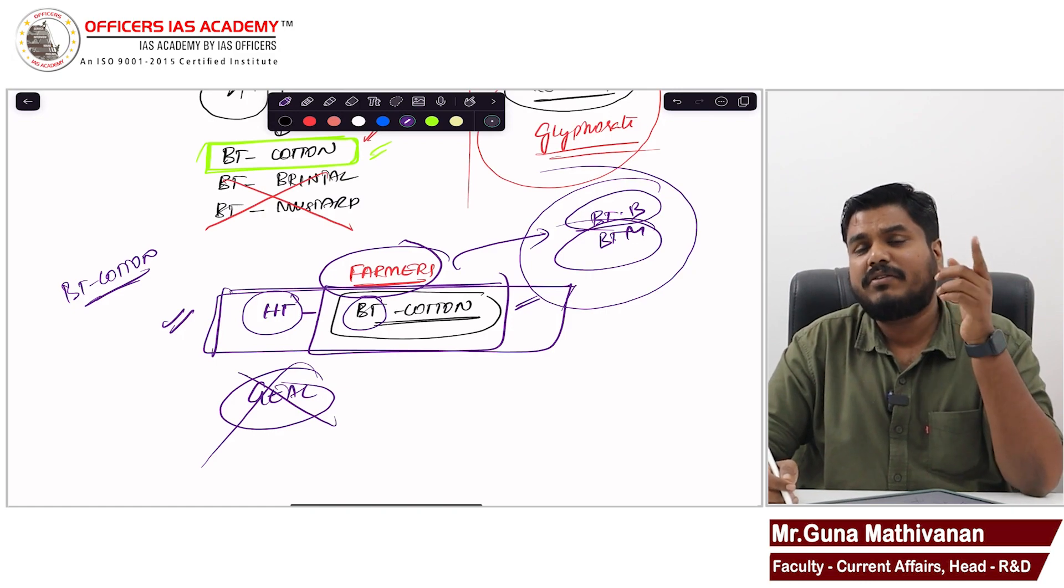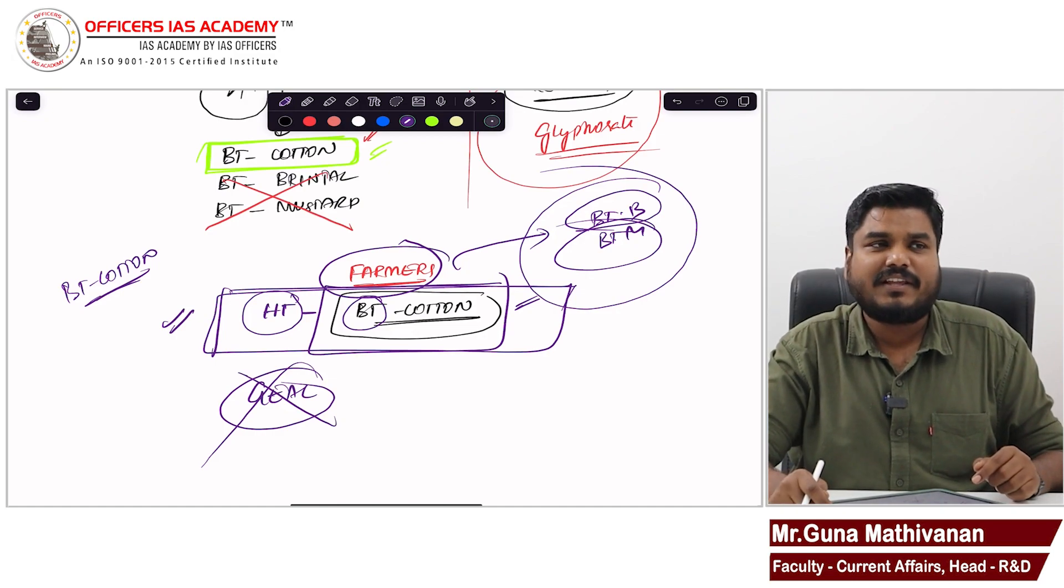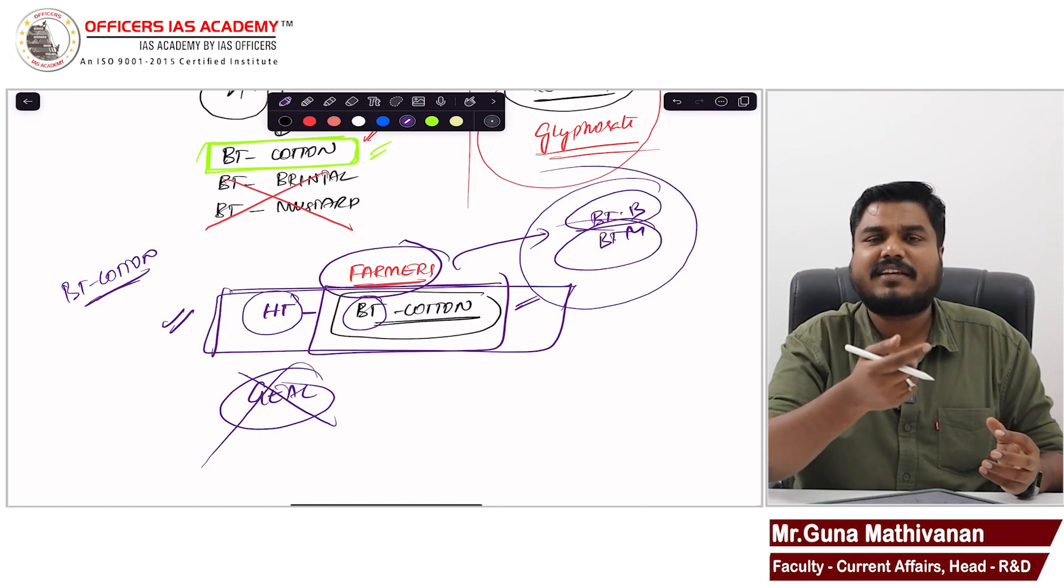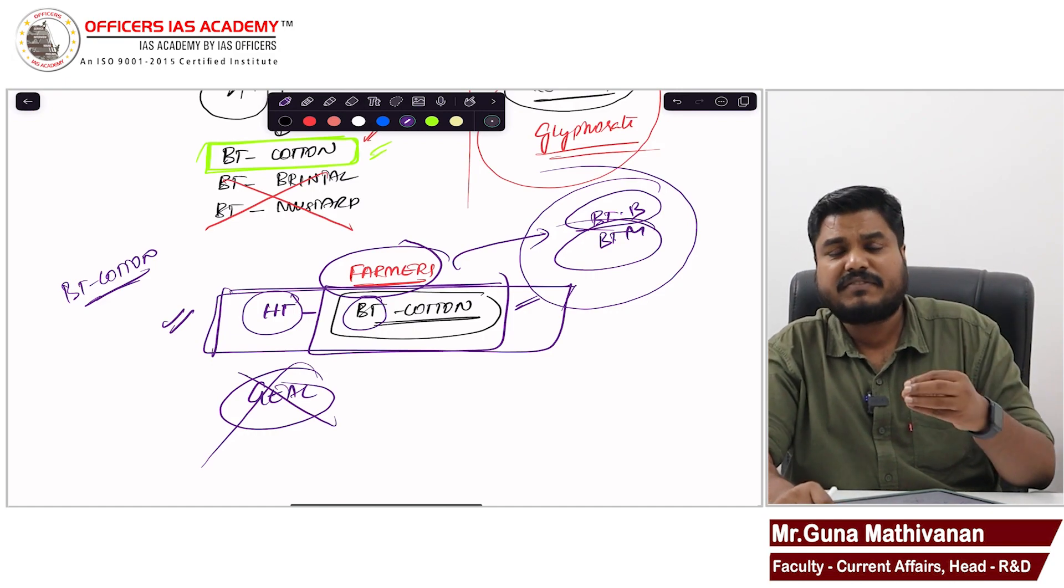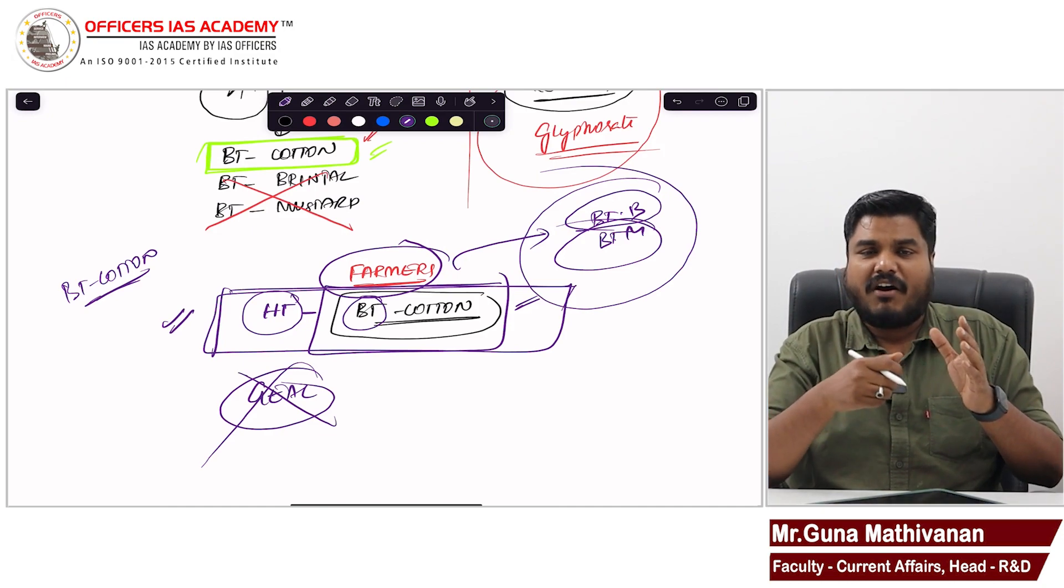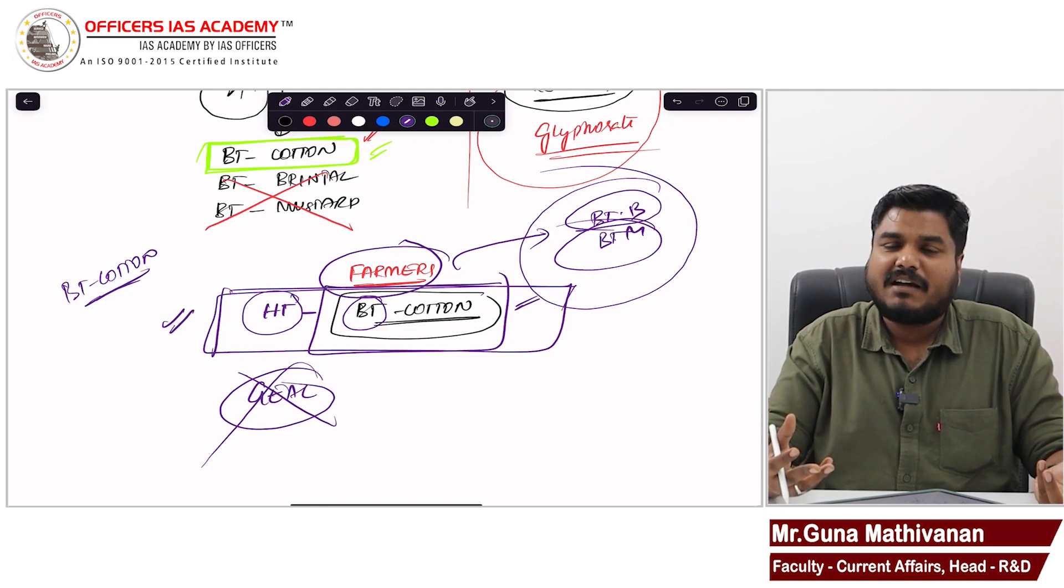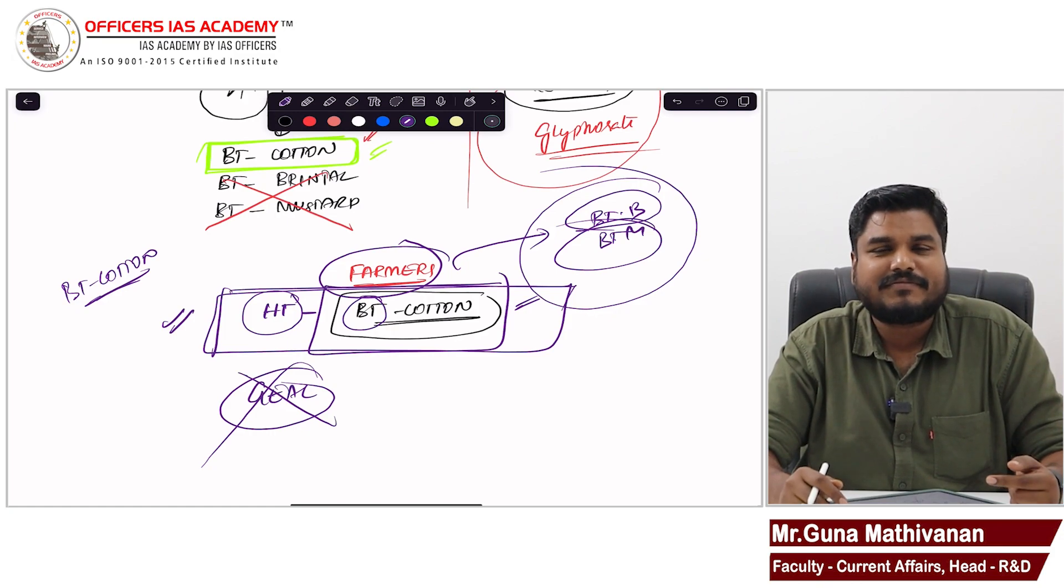There are so many advantages, but also comes with some threat. We are actually redesigning nature. Nature has given a design. By genetic modification, we are redesigning it. That can come up with unintended consequences. We do not know. By changing the gene altogether, we are coming up with a new variety that can come up with unintended consequences. We do not know.